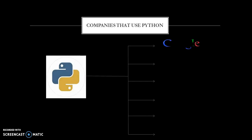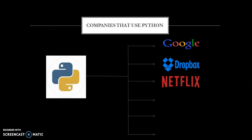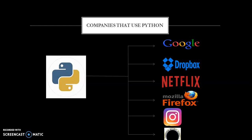Companies that use Python: The first one is Google — Google's search engine software is developed using Python to give better search results. Next is Dropbox, a cloud application used to store data, whose client and server applications are developed using Python. Netflix uses machine learning and Python in combination to analyze user interests and apply clustering algorithms to keep shows running long-term. Mozilla Firefox also uses Python for their search. Instagram is completely developed using Python. And the National Security Agency uses Python for their encryption and decryption algorithms.